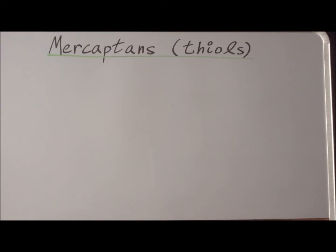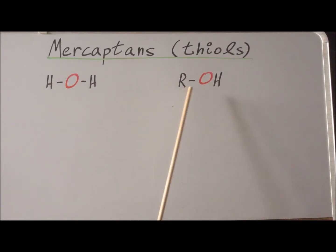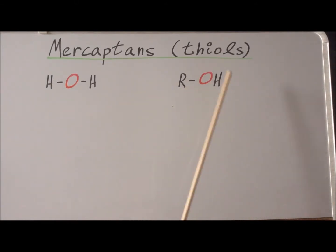In this video, we are going to discuss a class of compounds called both mercaptans and thiols. We call the very important class of organic compounds the alcohols, which can be written as an R group attached to the hydroxyl group OH.